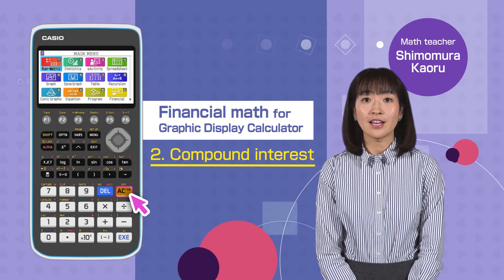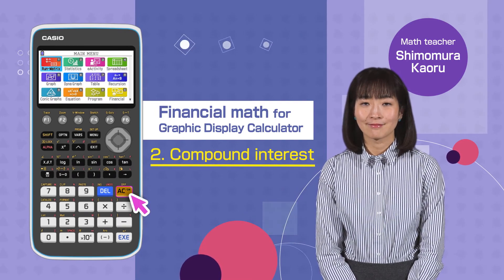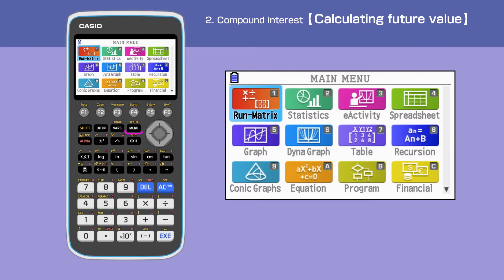Switch on your calculator, pressing AC button. Press the menu button to open the main menu, then move the cursor or press C to select Financial.